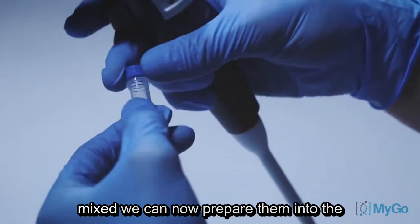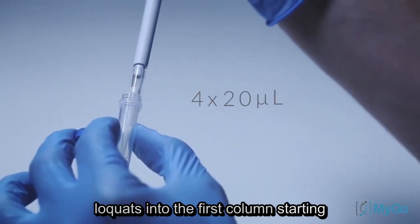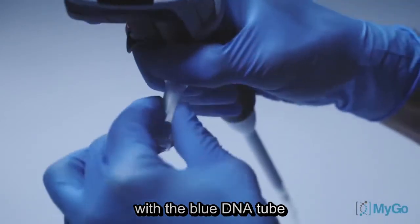Once mixed, we can now pipette them into the strips. Pipette four 20 microliter aliquots into the first column, starting with the blue DNA tube.